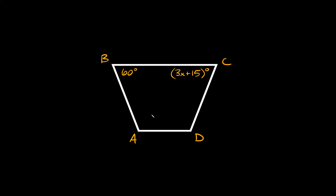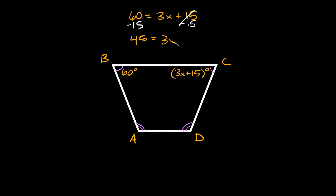Here's our next example. We have our trapezoid upside down this time, and we're given that this angle is 60 degrees and this one is 3x plus 15 degrees. We just want to solve for x. Keeping in mind that base angles are congruent — the acute angles are equal — we can simply set 60 equal to 3x plus 15. Solving for x: 60 minus 15 gives us 45, so 45 equals 3x, meaning x equals 15.